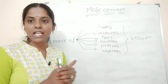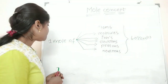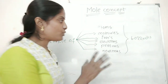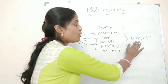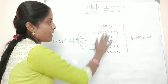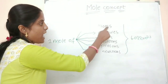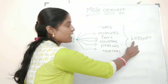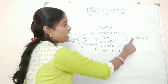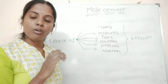1 mole of any gas is occupied by 22.4 liters at STP. It is a huge number, that's why we use it. It is only applicable for microscopic particles such as atoms, molecules, ions, electrons, protons, and neutrons. 1 mole of atoms has 6.022 × 10²³ atoms, and 1 mole of molecules has 6.022 × 10²³ molecules.